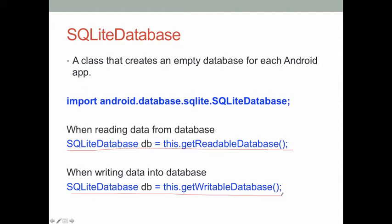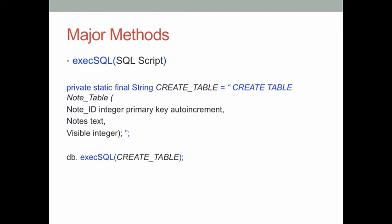After this, an empty database is set up in your app. The next question is, how can we create a data table in this database? We use a method from the SQLiteDatabase class called execSQL. In the parentheses, we have one argument — we need to put the SQL script into the parentheses. In Android, we usually write the SQLite script as a string type variable and then give this variable to the execSQL method.